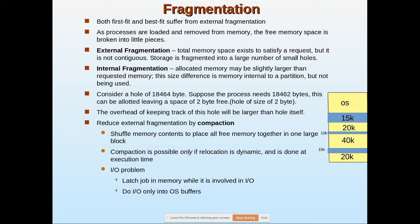External fragmentation: as processes are loaded and removed from memory, the free memory space is broken into little pieces. For example, here is a memory with 15k available. Once processes are added, there is 20k, then 40k — those in yellow represent processes, and the rest is operating system space. Some 5k is available here, 10k available there. These free spaces of 10k, 5k, and 15k are scattered between occupied process spaces.